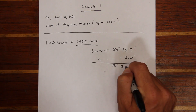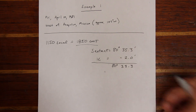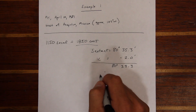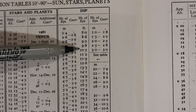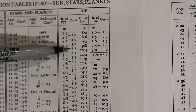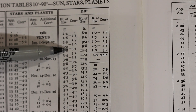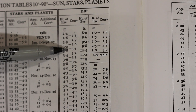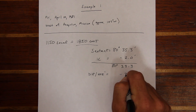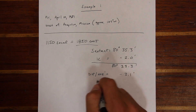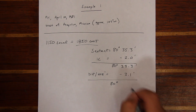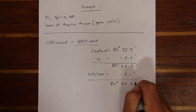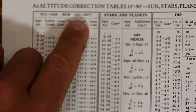The second correction has to deal with our height of eye. We know that we're about 10 feet above sea level when we make measurements. So we look in the DIP table and come up with a correction of negative 3.1. We apply that and come up with a new figure. This figure is called apparent altitude and we use it to enter the apparent altitude tables.